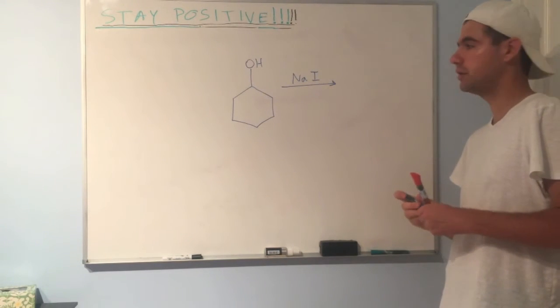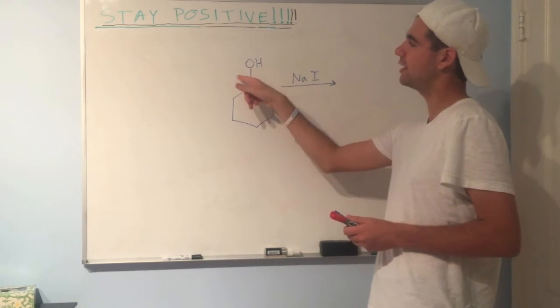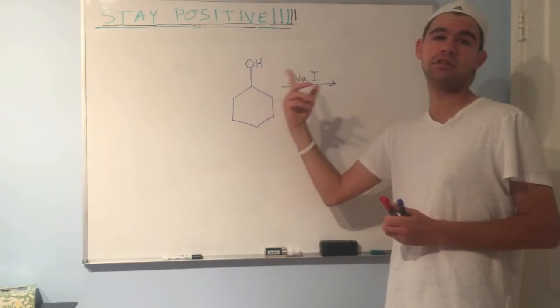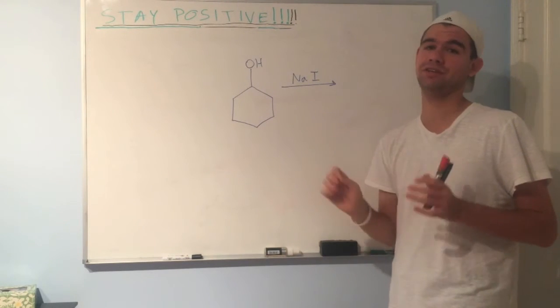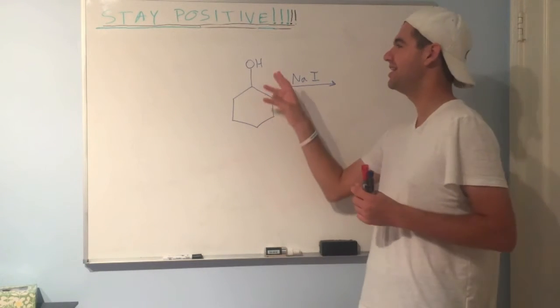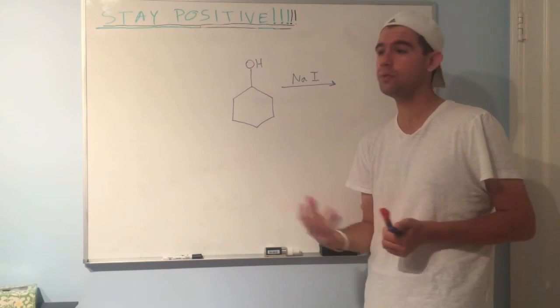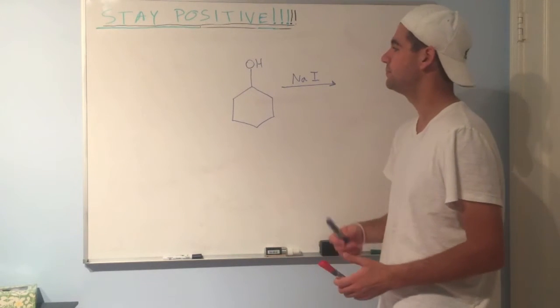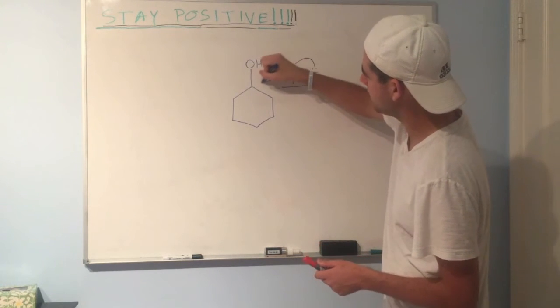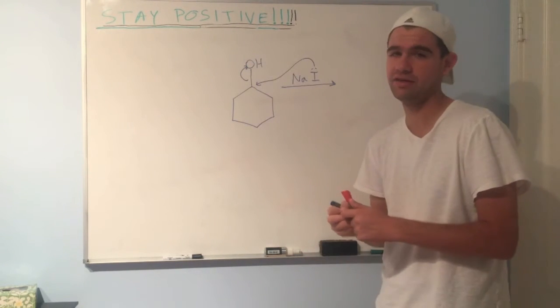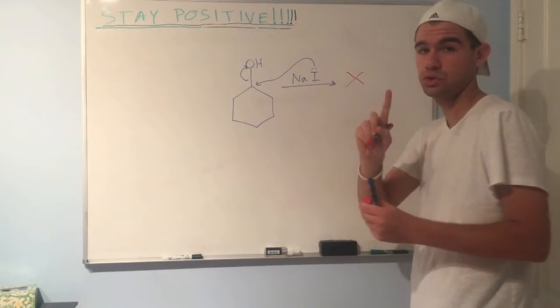So what do you guys think will happen here? You might be inclined to have this I minus attack this electrophilic carbon and send this off. What's the problem with that? OH is a very bad leaving group, right? It is so happy. Oxygen with two bonds is golden. It's like in heaven, right? Organic chemistry heaven. It does not want to leave. OH minus is extremely unstable on its own. We know that because it's a super strong base. Very, very unstable. So the chances of iodine coming in, attacking this carbon and kicking out OH, it's zero, close to none. So this will not happen. No SN2 reaction.